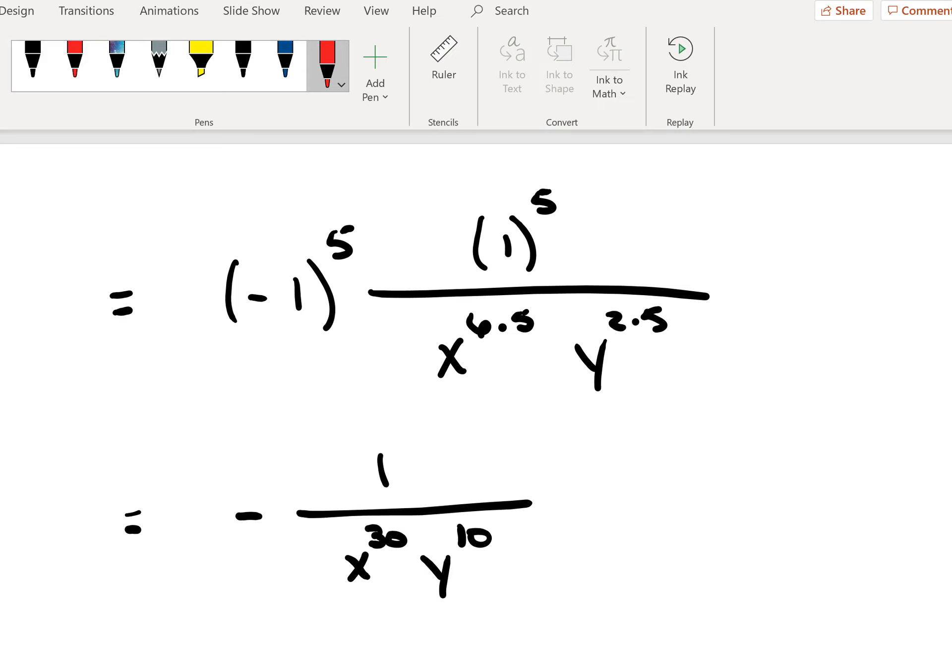And when we simplify here, we get negative one to the fifth. Negative one raised to an odd power is going to leave you a single negative sign. One to the fifth is always one. And then six times five gives us x to the thirtieth. Two times five gives us y to the tenth. And those quantities are in the denominator. Now, that is one method of doing it.